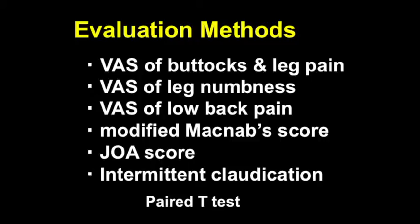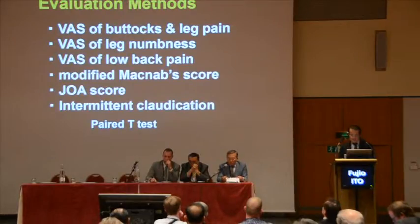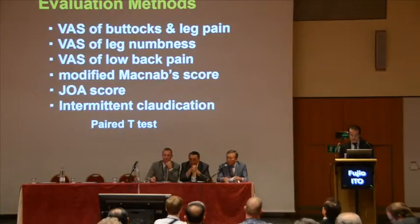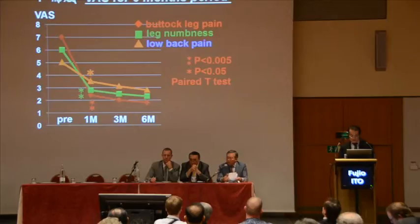Evaluation methods are the following. There are three pain factors: buttock and leg pain, leg numbness, and lower back pain. We also use a modified Macnab score and JOA score. Intermittent claudication may also be checked as an evaluation method.